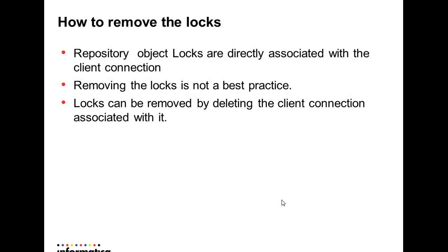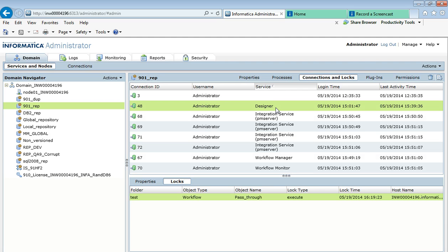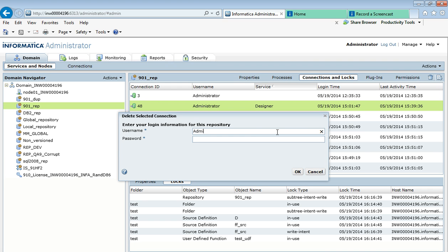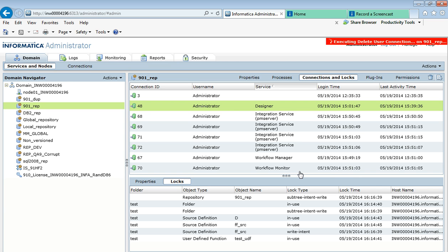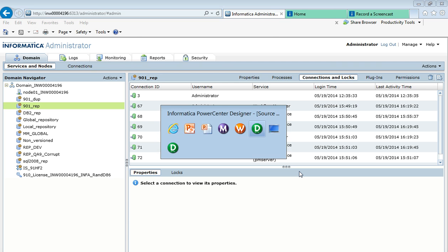Now I will show how to remove object locks. Repository object locks are directly associated with the client connection — the connection ID and the object are associated with the lock that has been applied. However, removing locks explicitly is not the best practice. Locks can be removed by directly deleting the client connection associated with the lock. If I want to remove all locks acquired by the designer, all these locks will be removed by deleting the connection. When I delete the connection, automatically all the locks are removed, but the connection itself will also get terminated — that's why it is not the best practice.